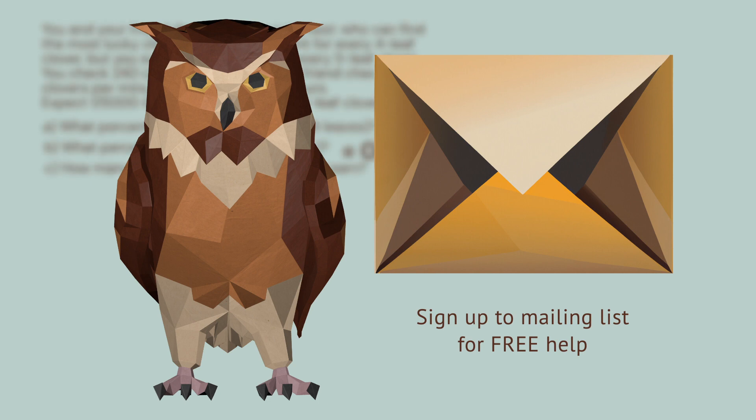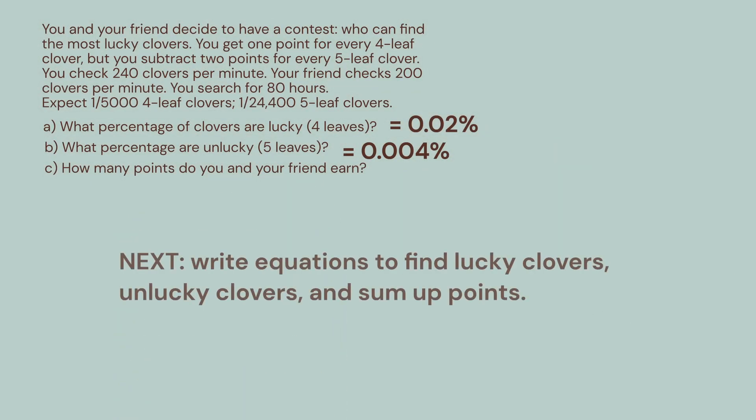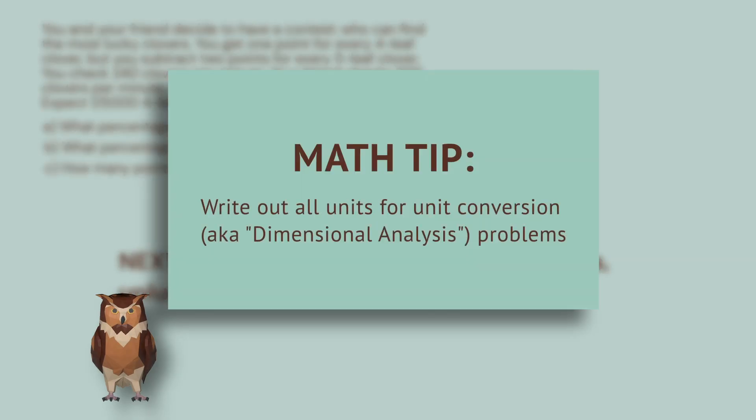Now let's turn to the contest. We can figure out how many lucky clovers you should find, how many unlucky clovers, and then sum up the good points and the bad points. There are a few ways you could set up this problem, but it's a great habit to write out all the units so you don't accidentally invert one of the conversion factors. This way, you can make sure the units cancel. This is called unit conversion, or dimensional analysis.